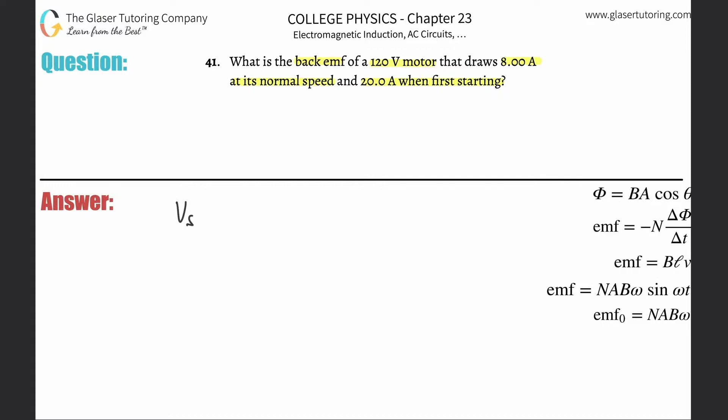So we have that the voltage supplied, we're using Ohm's law, but I'm just calling this the voltage supplied will be equal to the current multiplied by the resistance. And this is the current at operating speed.